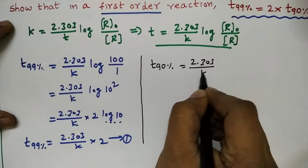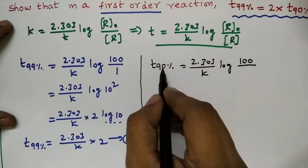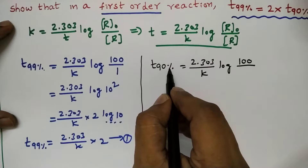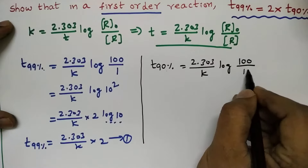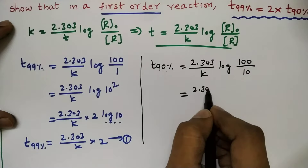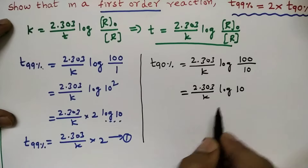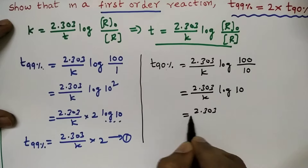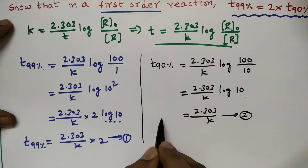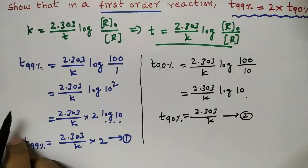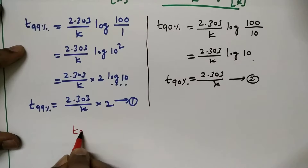Now for t90%: t90% = 2.303/k × log(100 / remaining). 90% indicates 90% of the reactant is consumed, so remaining = 100 − 90 = 10. Therefore t90% = 2.303/k × log(10), and since log10 = 1, t90% = 2.303/k.